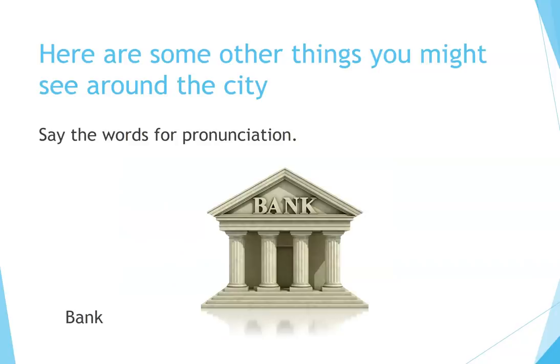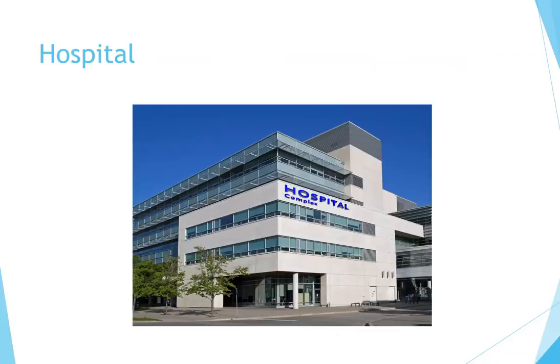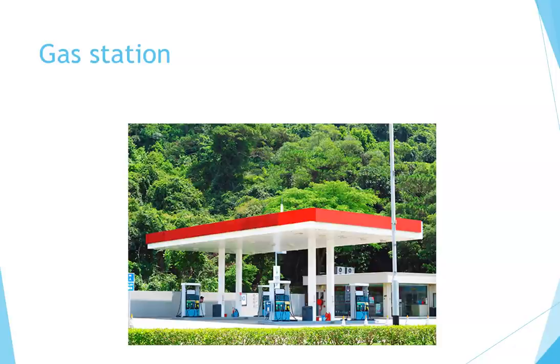Here are some other things you might see around the city — say the words for pronunciation. Bank: a bank is where you deposit money. Hospital: a hospital is a place where you go when you're sick or hurt. Gas station: a gas station is where you buy gasoline for your car. Post office: a post office is a place where you mail letters or packages.